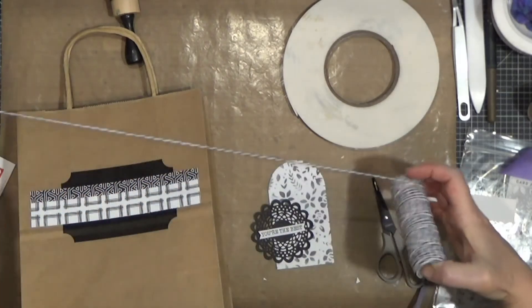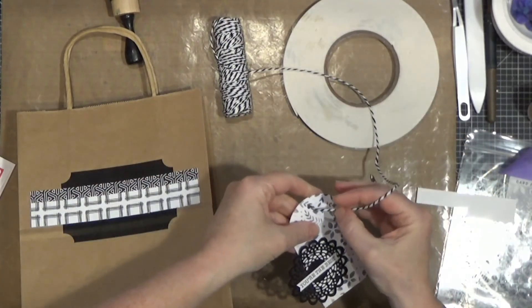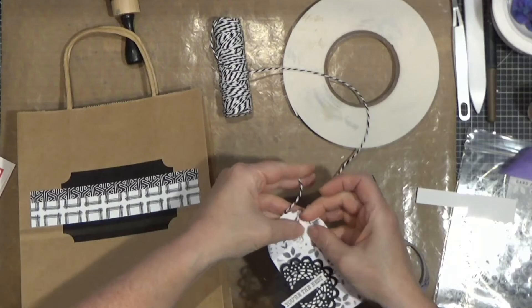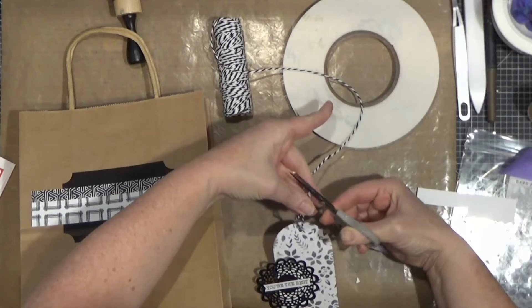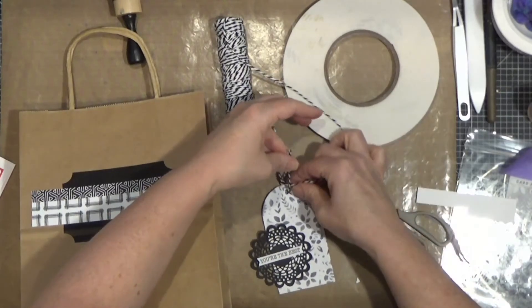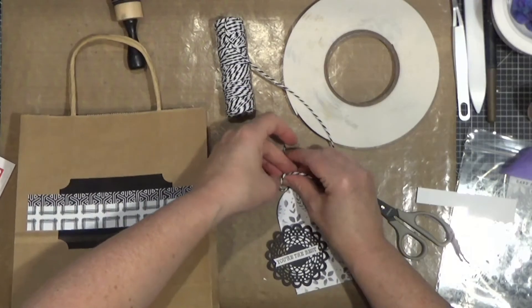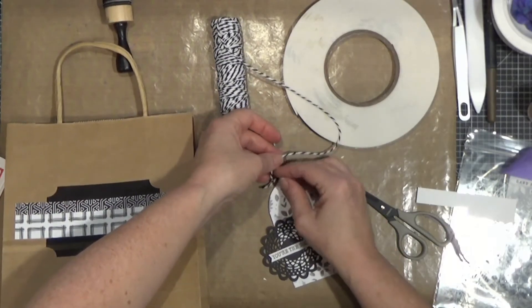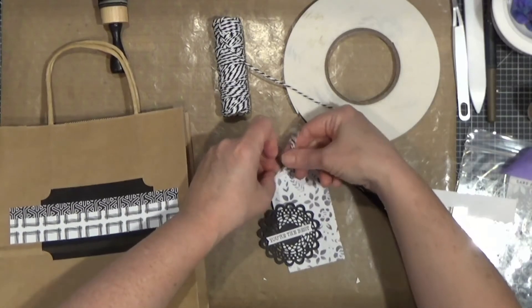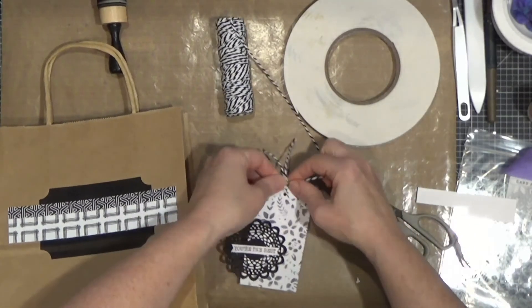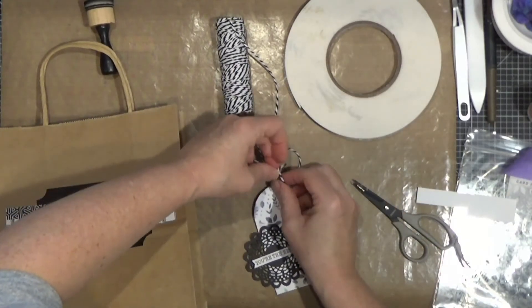I have some black and white twine. And I'm going to loop a little bit through. And then I'm going to take another piece. And do this. Will it work? Yes, I think it will. And I'm going to double knot it. Call it a day.